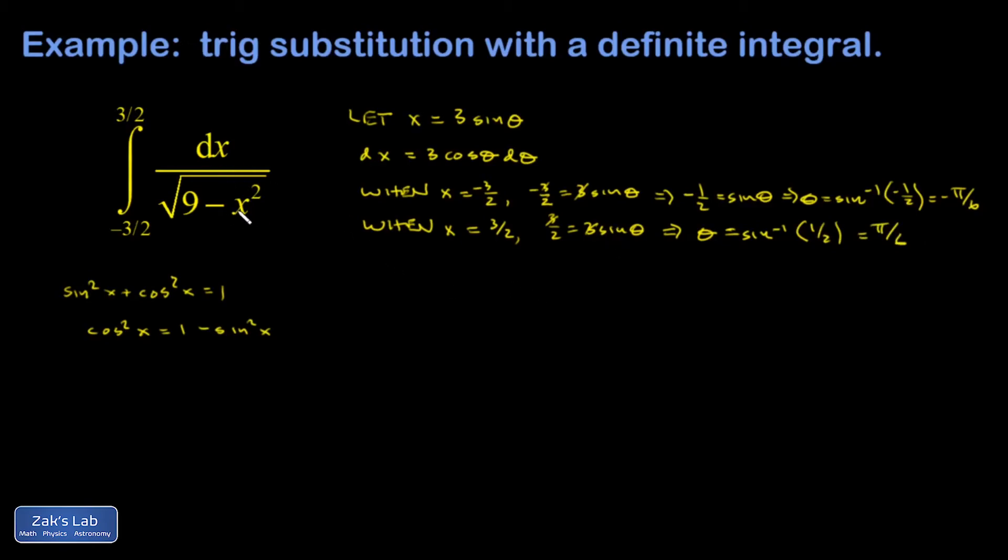Inside the square root, I'm going to end up with 9 minus the square of x, which is 9 sine squared theta. So let's go ahead and rewrite the integral now. I'm going from negative pi over 6 to pi over 6. dx is 3 cosine theta d theta.